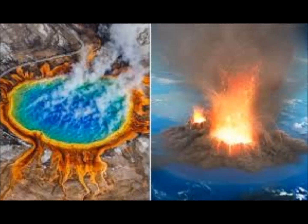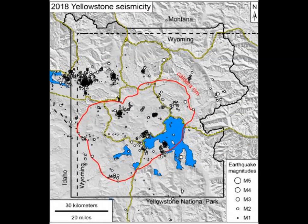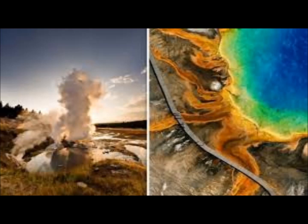Sequences that don't fit a mainshock-aftershock pattern are typically considered swarms. There is no precise definition of when a mainshock-aftershock sequence becomes a swarm — the distinction is not sharp. Earthquake sequences follow a whole range of behaviors. The swarm designation is typically applied when we observe relatively many earthquakes within a relatively small area that just don't fit the mainshock-aftershock pattern.